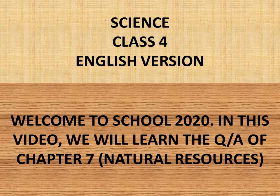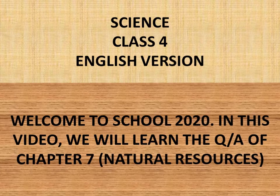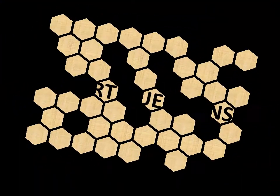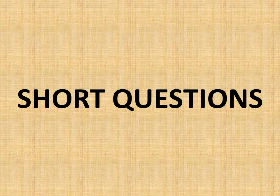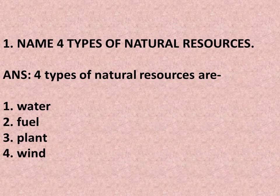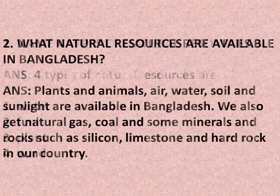Welcome to School 2020. In this video we will learn the question answers of Chapter 7: Natural Resources. Short questions. Number one: Name four types of natural resources. Answer: Four types of natural resources are water, fuel, plant, and wind.